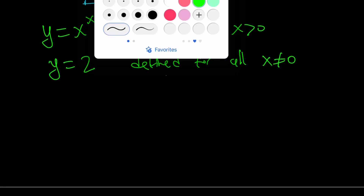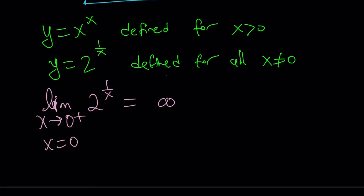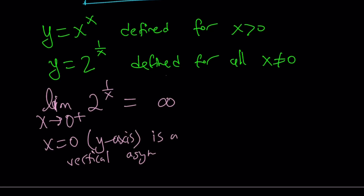I'm going to consider the limit to understand the end behavior of this function. Since x cannot be 0 and I'm interested in positive x values, I'll take the limit as x approaches 0 from the right. When x approaches 0 from the right, 1 over x is going to be very large and positive, and 2 to the power of that approaches infinity. So the limit as x approaches 0 from the right of 2 to the power of 1 over x equals positive infinity, and the y-axis is going to be a vertical asymptote.